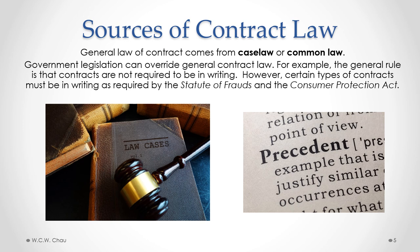These videos are based on Canadian case law, or Canadian common law. Government legislation can also override general contract law or common law. For example, the general rule is that contracts are not required to be in writing, but as mentioned, there are certain types of contracts that have to be in writing. This is required by a statute called the Statute of Frauds. There is also another statute that requires certain consumer contracts to be in writing, called the Consumer Protection Act. Both of those pieces of government legislation serve to override or modify general contract law, which arises from common law.